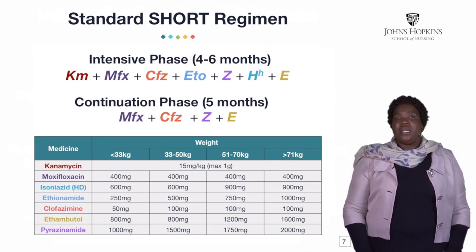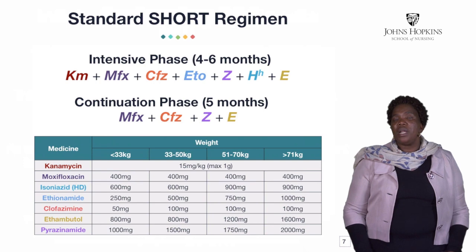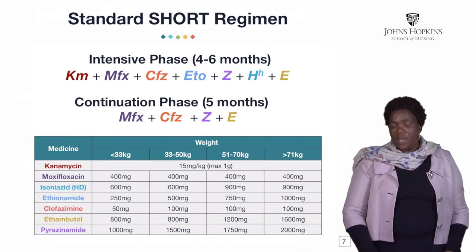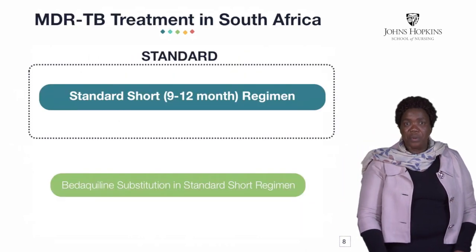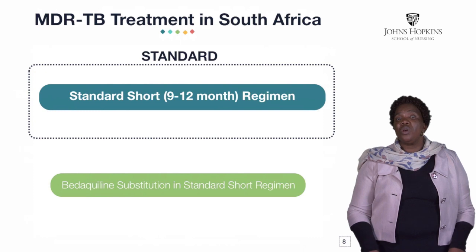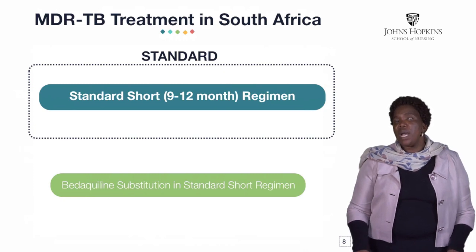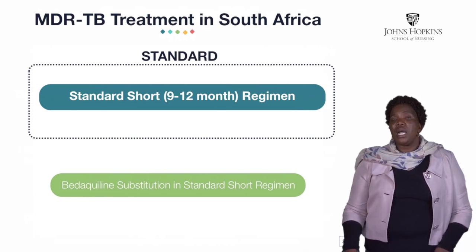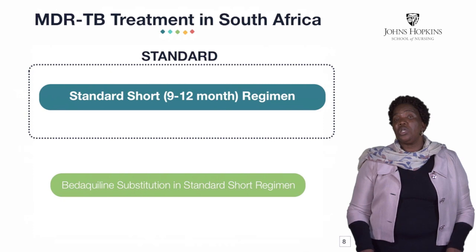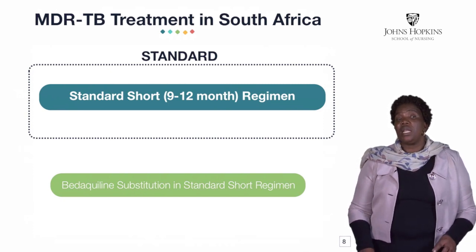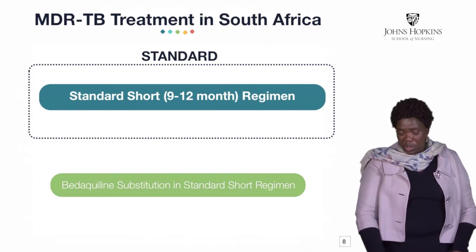This slide shows the normal standard short-course regimen discussed in Module 1. Should this patient start facing side effects with this regimen, that is when the patient is going to be substituted with bedaquiline — still on 9 to 12 months. You will substitute kanamycin if the patient is having challenges with kanamycin. If the patient from the beginning was having problems with ototoxicity, this patient will be started from initiation on a bedaquiline substitution regimen.